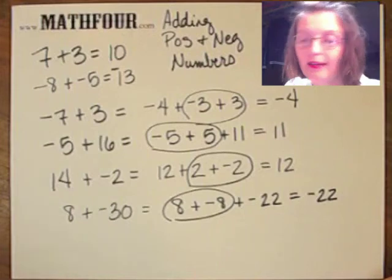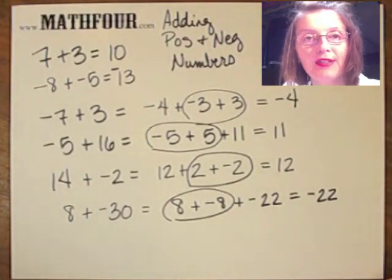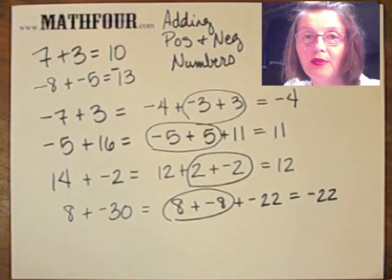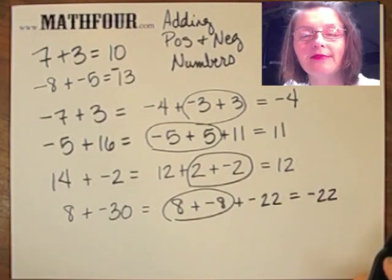So that's how you can add positive and negative numbers that are different signs together, and you don't have to remember those rules. You just break them into pieces and go from there.